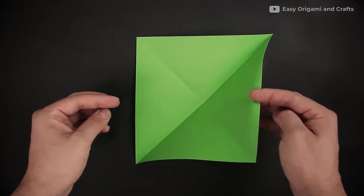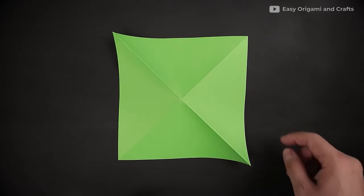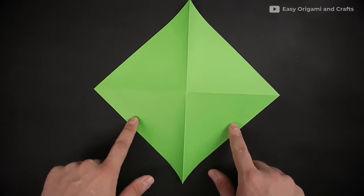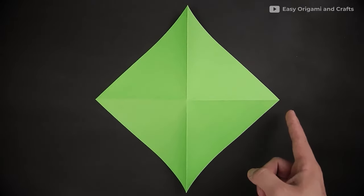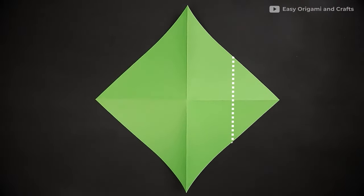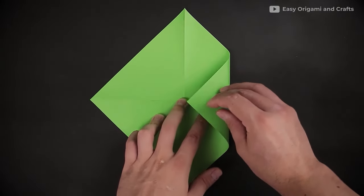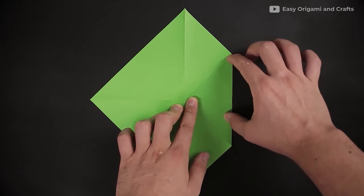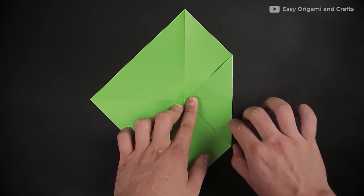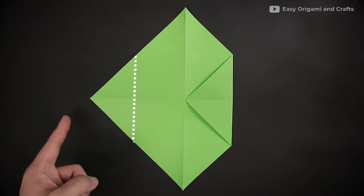Now, let's turn the paper over and rotate it in this position. Starting on the right side, let's bring the corner to the middle, folding in this line here. Then, on the other side too, just bring the corner to the middle.